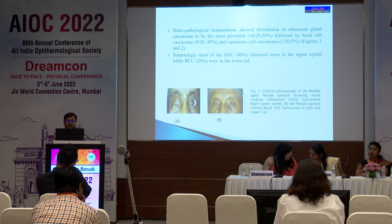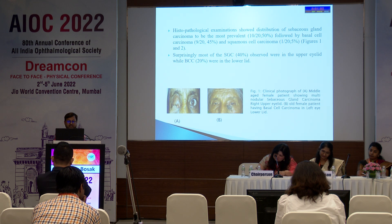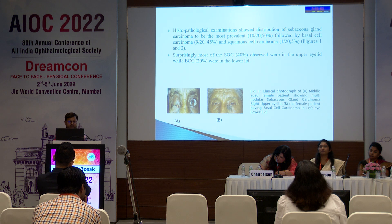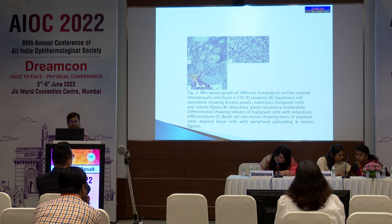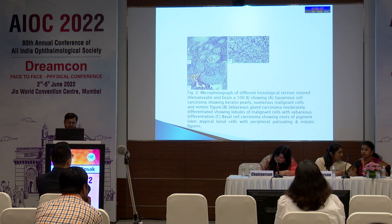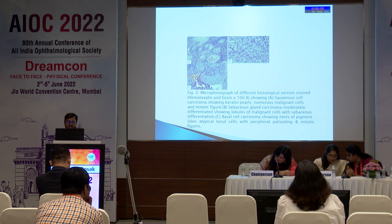Histopathological examination showed sebaceous gland carcinoma to be most prevalent at 50%, followed by basal cell carcinoma at 45%, and squamous cell carcinoma at 5%. Surprisingly, most sebaceous gland carcinomas were observed in the upper lid, while basal cell carcinomas were in the lower lid. Microphotographs of histological sections show sebaceous gland carcinoma, moderately differentiated, with lobules of malignant cells showing sebaceous differentiation, and basal cell carcinoma showing nests of pigment-laden atypical basal cells.